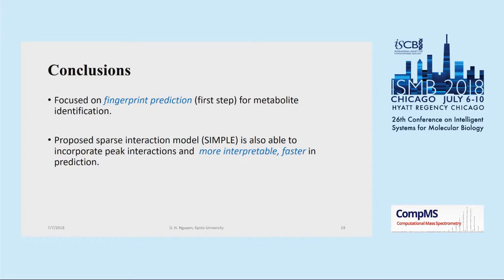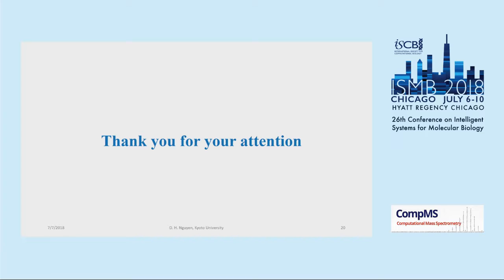In conclusion, in this work we focus on fingerprint prediction, which is the first step in the machine learning approach for metabolite identification. Motivated by some drawbacks of existing methods, we propose the Sparse Interaction Model, which can incorporate peak interaction and is faster in prediction. Additionally, it is more interpretable than kernel learning methods. Thank you very much.